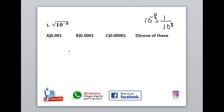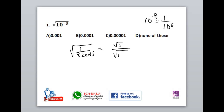We will repeat the question about the value. The root is 1 by — how many zeros are there? The root is 1 to the root. That's our root.